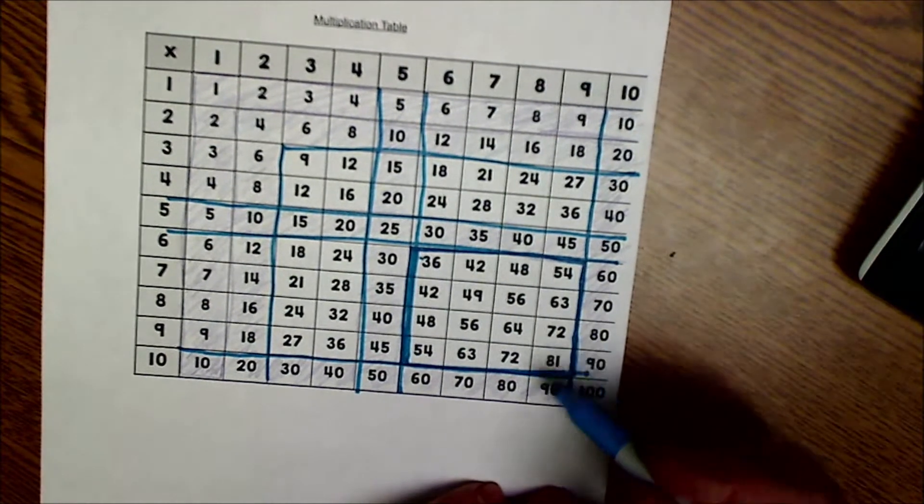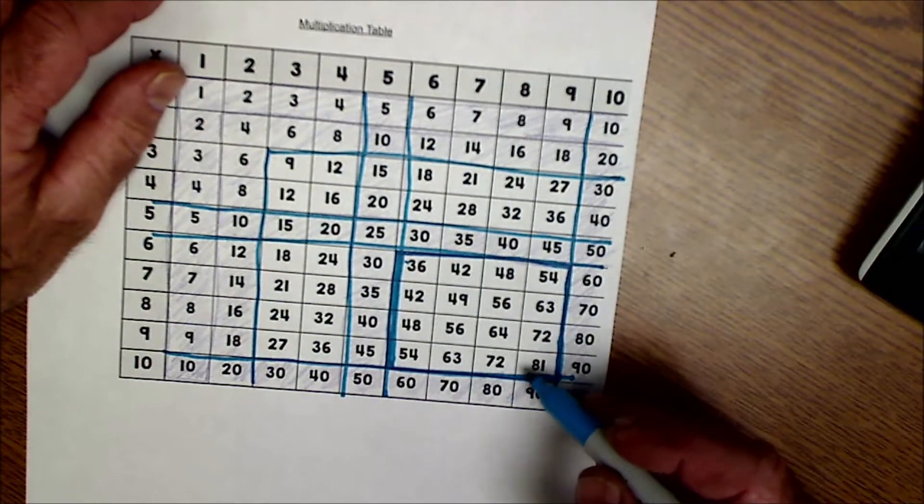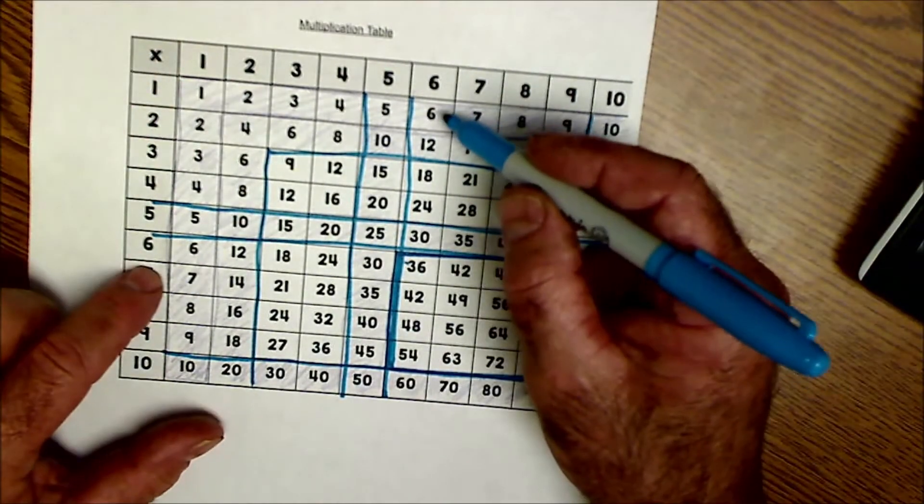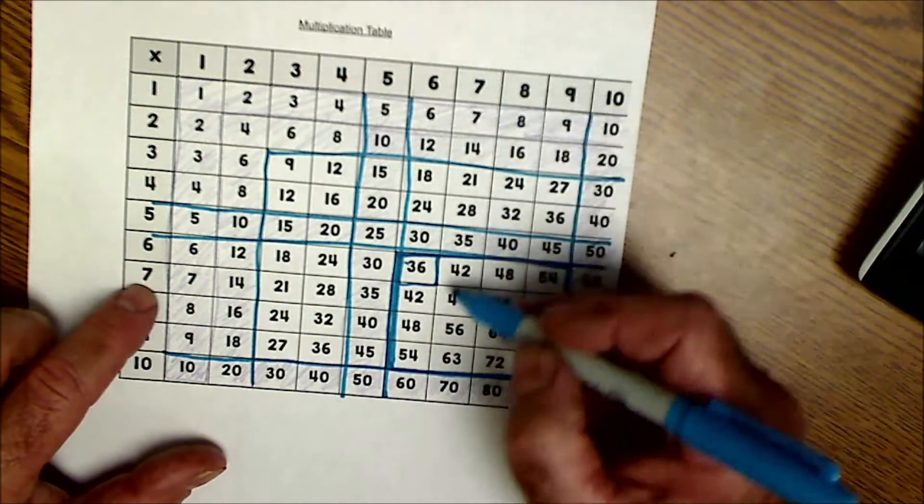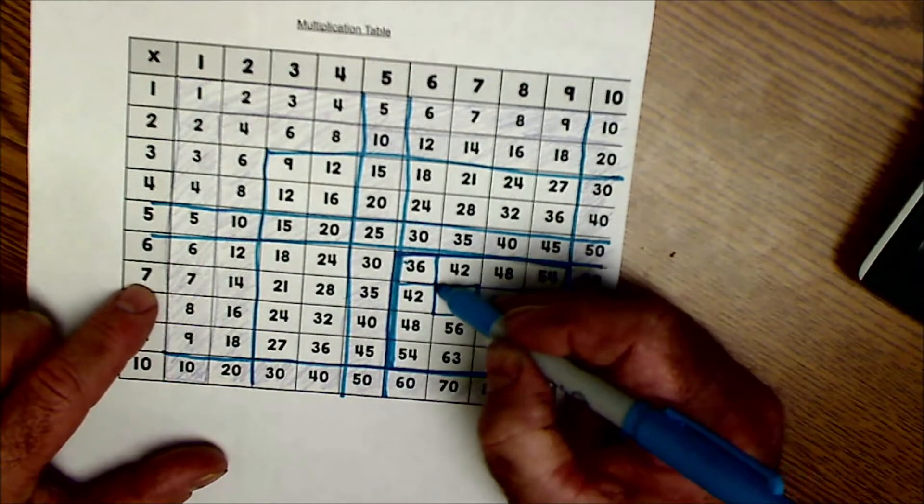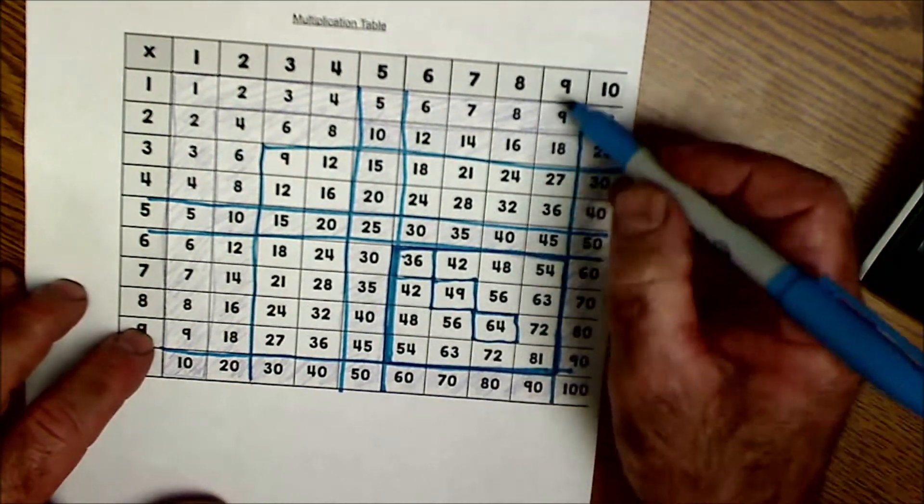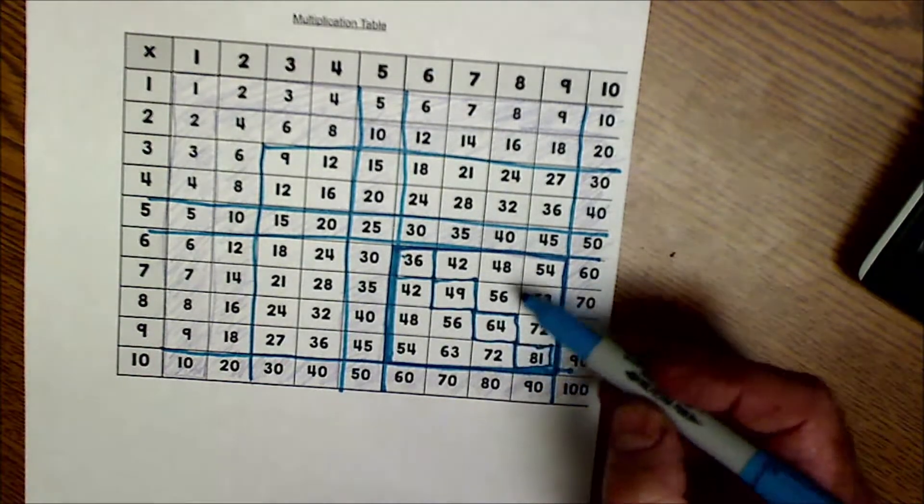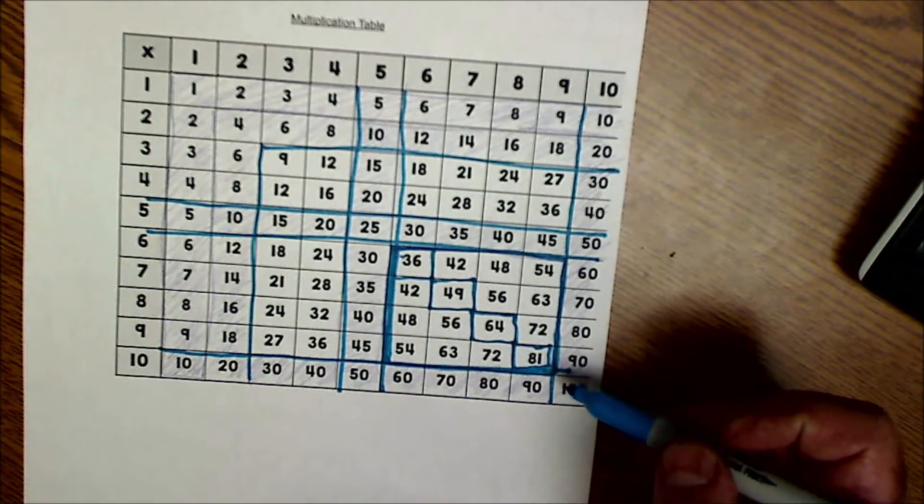So once you narrow it down to these 16 multiplication facts, then work on your squares, meaning the number times itself. So 6 times 6 is 36. 7 times 7 is 49. 8 times 8 is 64. 9 times 9 is 81. So you've taken these 16 multiplication facts, you just knocked out 4 of them. So now you're left with 12.